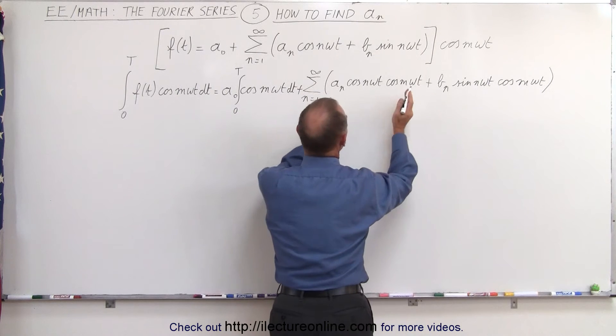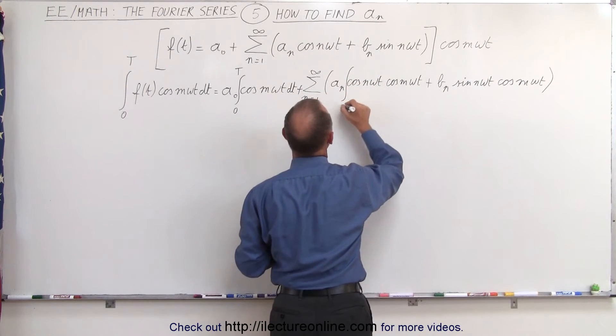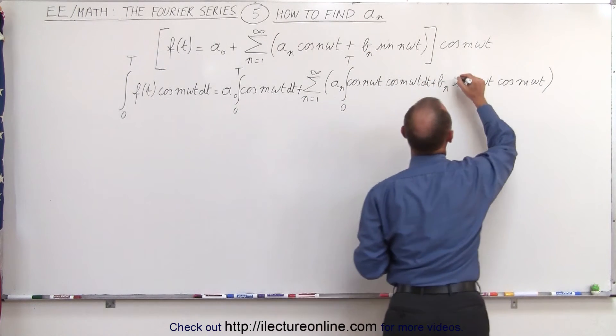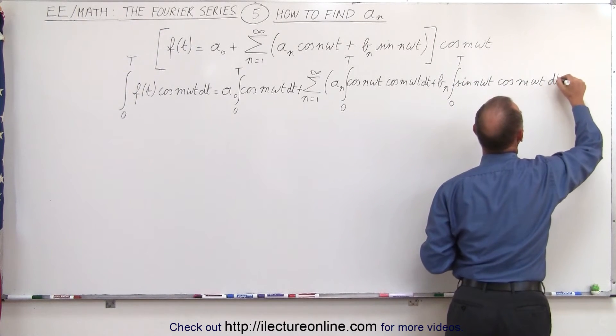Plus, we're going to integrate this right here. We can take the a sub n outside integral from 0 to t. We're going to need a dt. Plus, we integrate this from 0 to t. And again, we're going to need a dt right here.